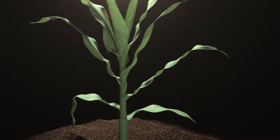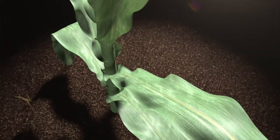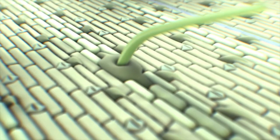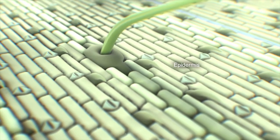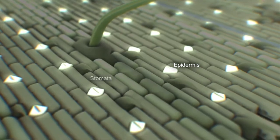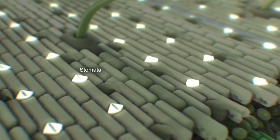The leaf is the factory of photosynthesis, taking energy from sunlight to make sugars that feed the plant. A single corn leaf has an upper and lower skin layer called an epidermis, with pores called stomata that take in carbon dioxide for photosynthesis.